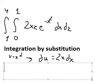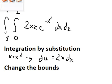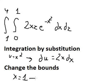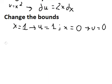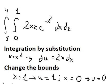Next we need to change the bounds. When x equals number one, we put number one in here so we get u equal to number one. When x equals number zero, we put number zero in here and we have u equals to number zero. So the bounds do not change. For dx we substitute du, and for x squared we substitute u.